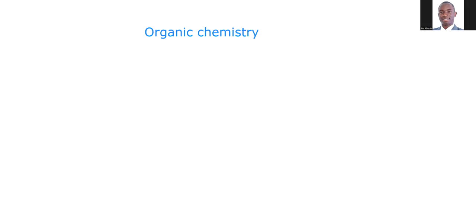And if you added paper three, which would most likely be question three in paper three, that would be about another 10 marks. So you could imagine that if you have mastered organic chemistry, you could be sure of at least somewhere between 30 to 40 marks of your overall grade, all the way from paper one to paper three. So let's get it started.